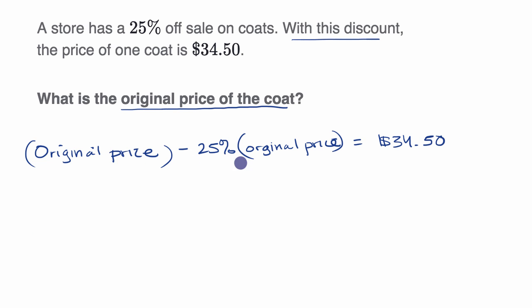Can we solve for the original price? One way to think about it: this is 100% of the original price minus 25% of the original price. Well, 100% minus 25% is 75% of our original price. This is why people use letters for variables so they don't have to keep writing this over and over. 75% of the original price equals $34.50.